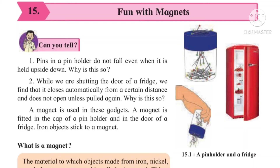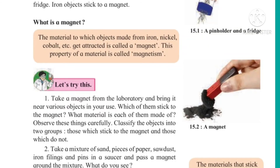Now, what is a magnet? The material to which objects made from iron, nickel, cobalt, etc. get attracted is called a magnet. Anything to which objects made of iron, nickel, metal, and cobalt get attracted — that is a magnet. This property of a material is called magnetism.